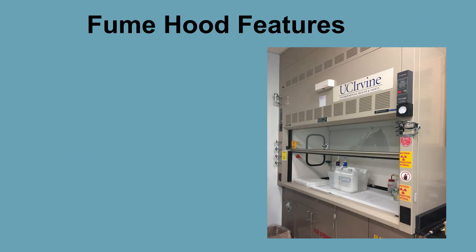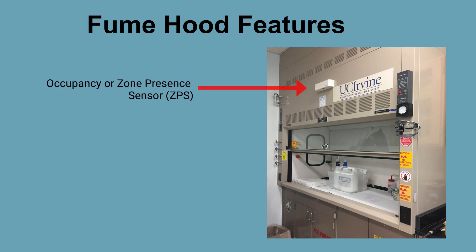All users must know about the features associated with the fume hood. The zone presence sensor detects the presence of the user in front of the fume hood. When the user is present, the zone presence sensor signals the fume hood system to operate in the standard or higher flow mode. In the absence of a user, the zone presence sensor signals the fume hood system to operate in the standby or lower flow mode to minimize energy usage.